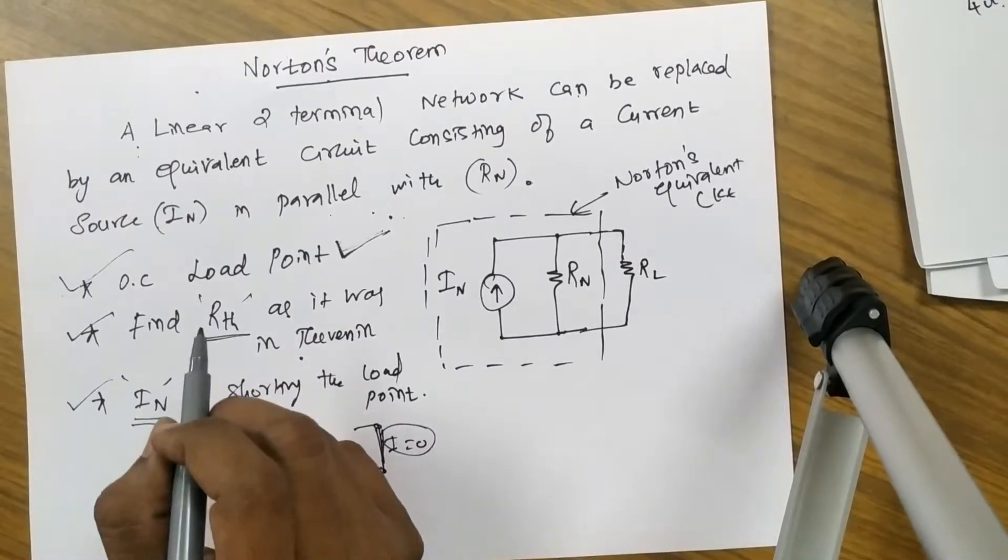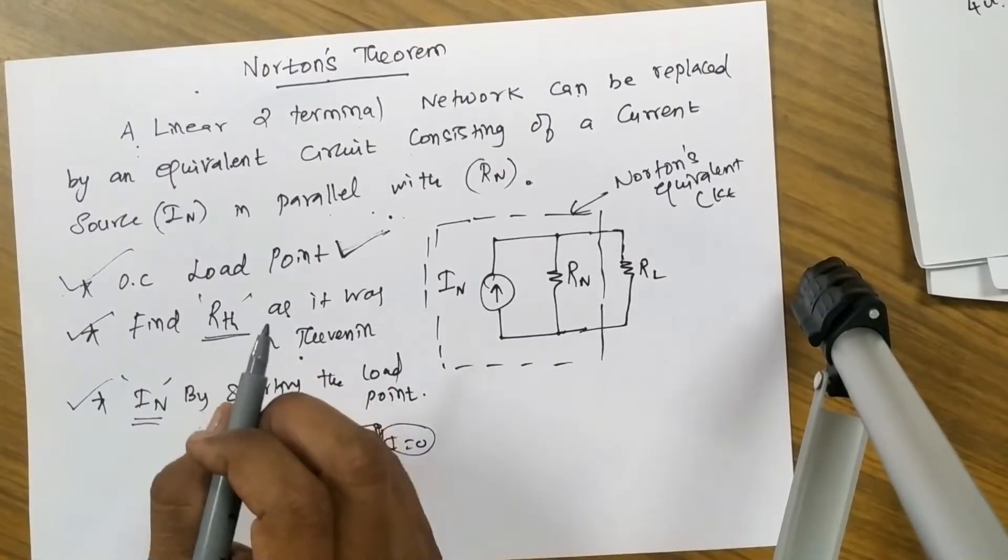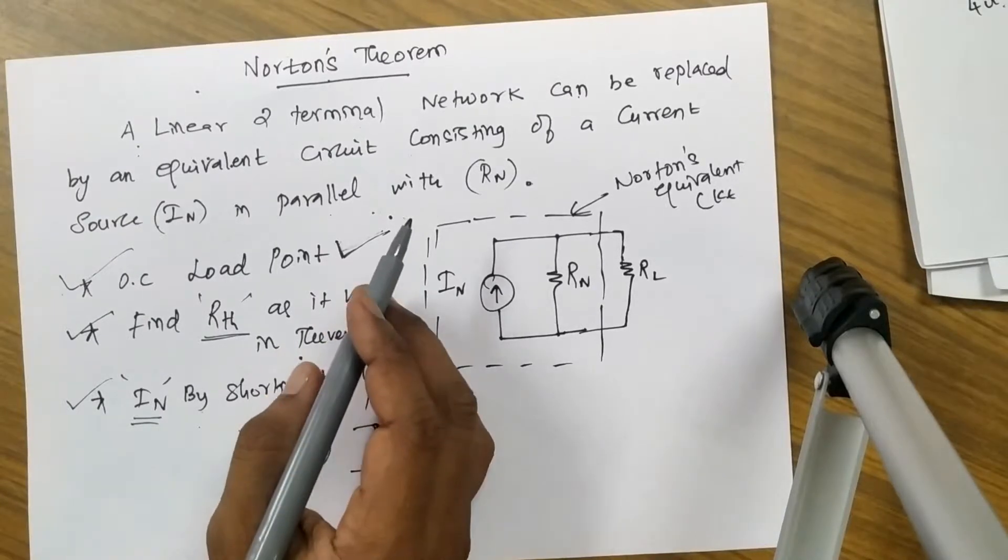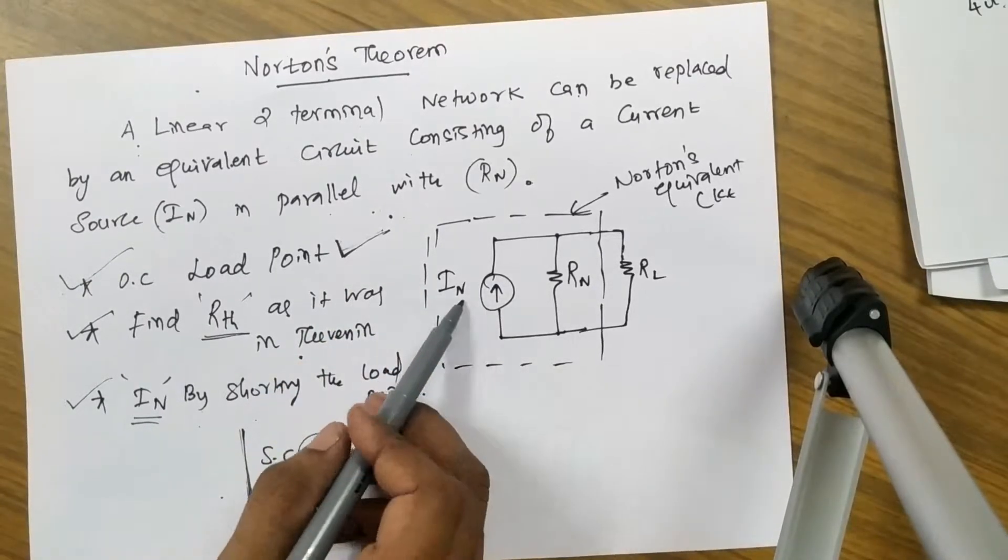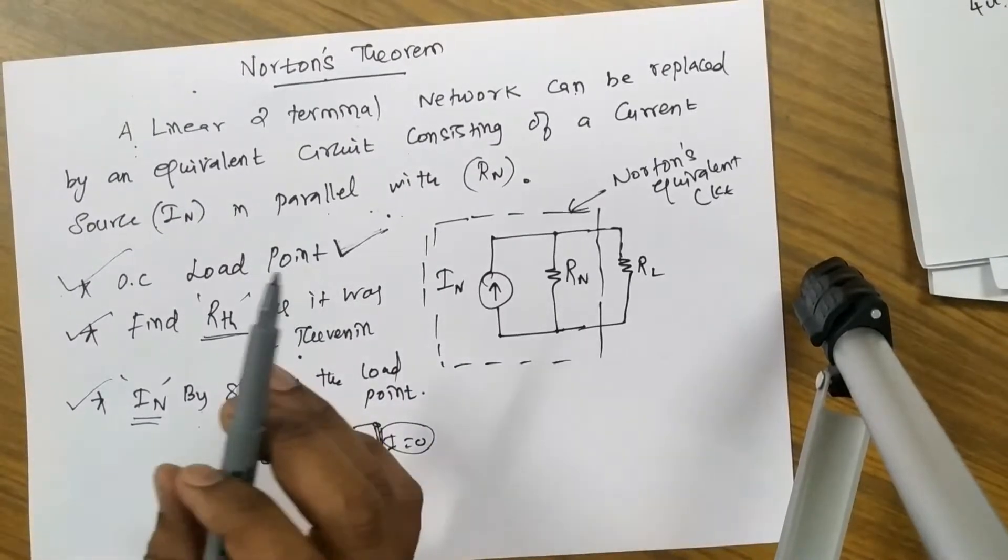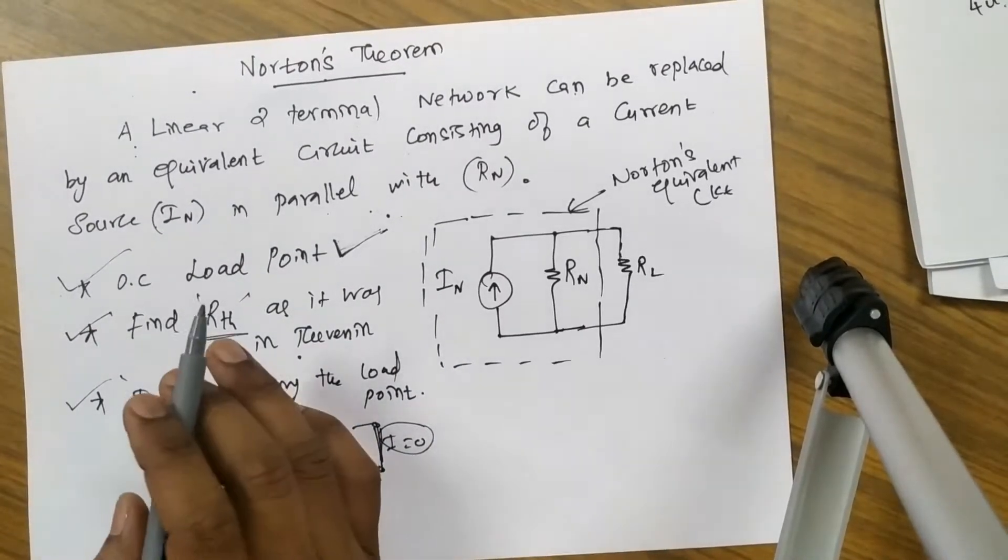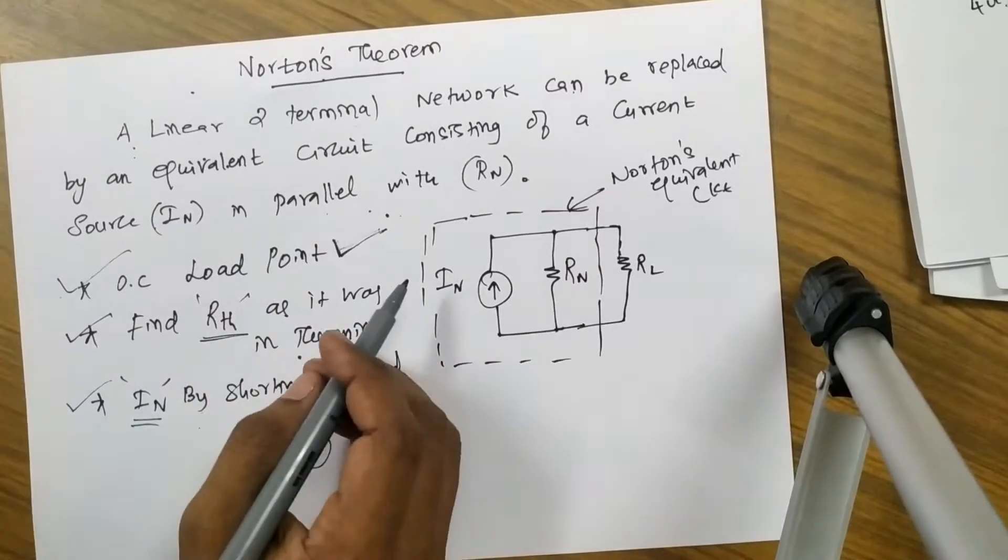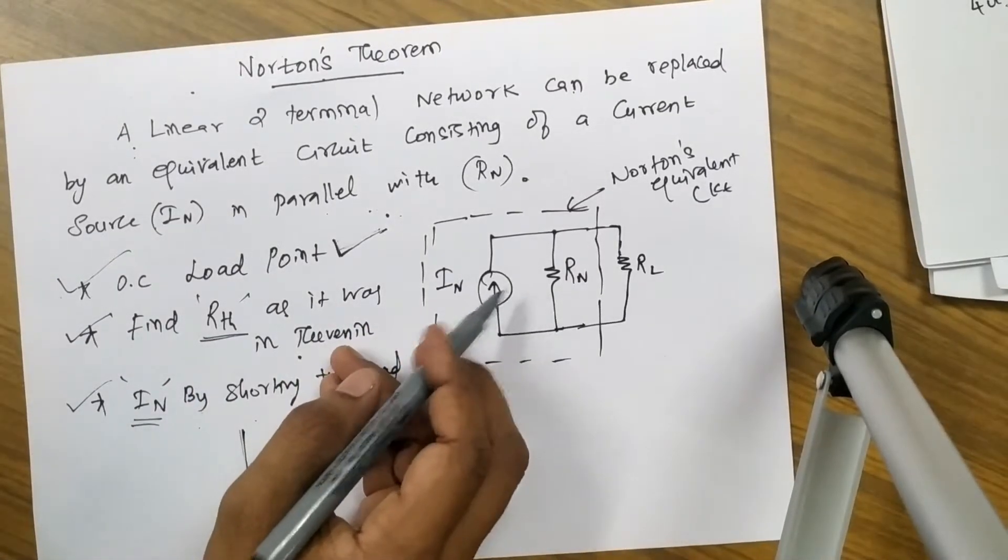The only difference between Thevenin's theorem and Norton's theorem is, in Thevenin's theorem we got voltage source series resistance, but here we got current source parallel resistance. Like in the source transformation technique, one form of source into another form of source we followed a procedure. The same thing you can see here.